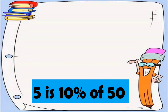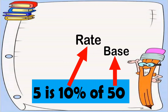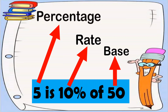Let's have another illustration. Five is ten percent of fifty. Fifty is written after the word 'of' and it is the number that represents the whole. Therefore, fifty is our base. Ten percent has a percent sign and it is the percent of the whole, so ten percent is our rate. And five is the number that represents a part of a whole, so five is our percentage.